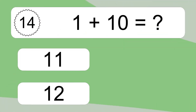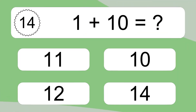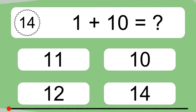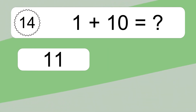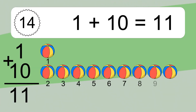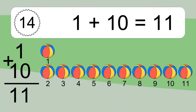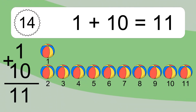1 plus 10 equals what? 1 plus 10 equals 11. Let's count it: 1, 2, 3, 4, 5, 6, 7, 8, 9, 10, 11.